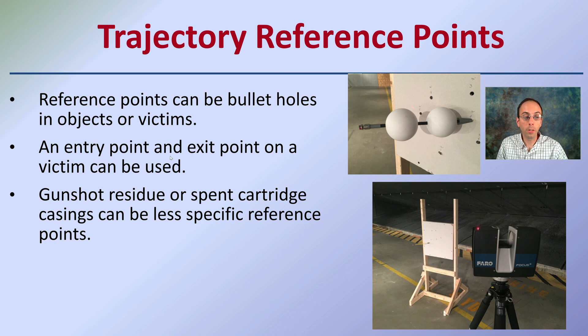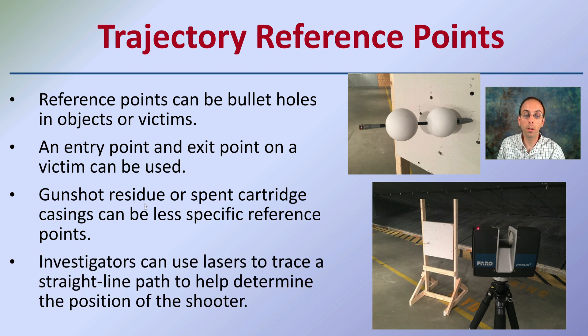Gunshot residue or spent cartridge casings can be less specific reference points, but still an option. Investigators can use lasers to trace a straight line path to help determine the position of the shooter, and that's what we're going to be calculating here.